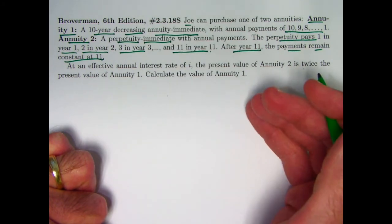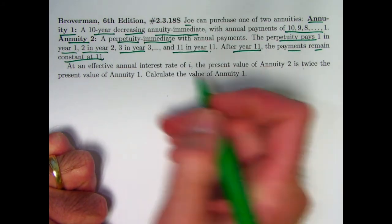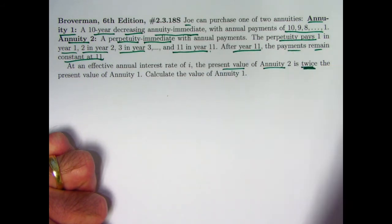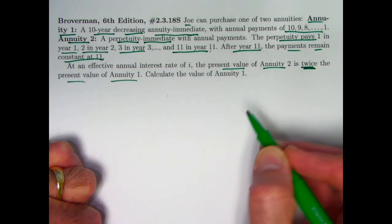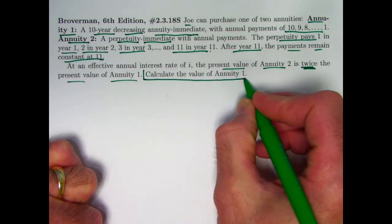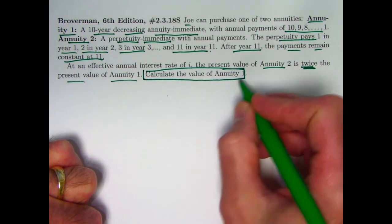So it's initially increasing and then it stays constant. At an effective annual interest rate of i, the present value of annuity 2 is twice the present value of annuity 1. The goal is not to calculate i. Instead the goal is to calculate the value, evidently the present value of annuity 1.